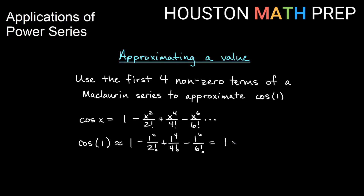So we get one minus a half plus one over four factorial — that's 24 — minus one over six factorial — that's 720. We don't expect you to know that. So if we add all these together, we should get a nice approximation for cosine of one.